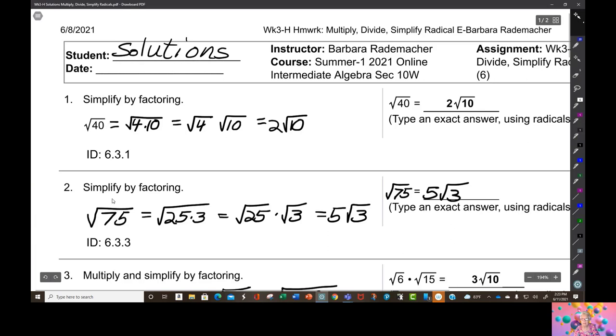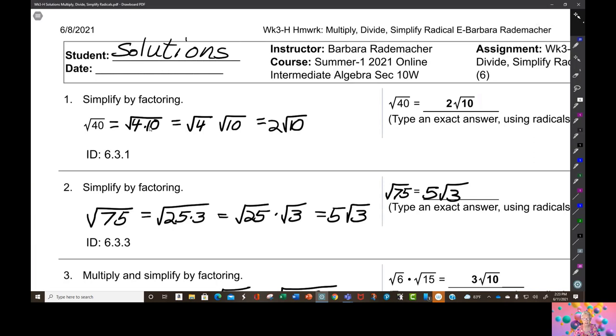Simplify the square root of 40. The goal when you simplify a radical expression is to find the perfect squares in the expression. Well, here we have a number 40, and 40 breaks down into 4 times 10. It breaks down into a number of different factors, but this is the only set of factors that allows us to have a perfect square, the largest possible perfect square.